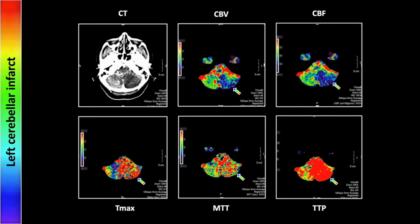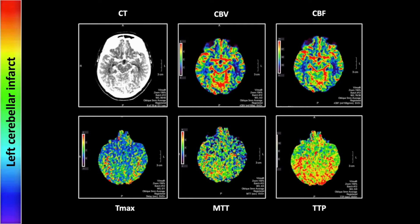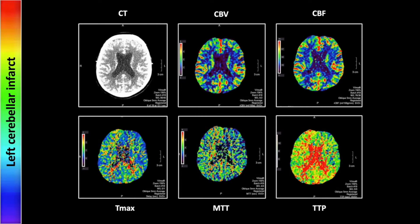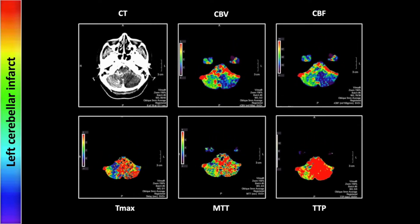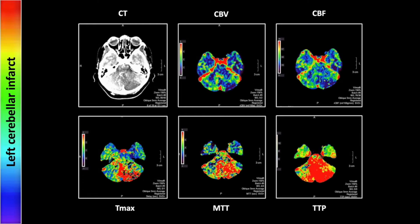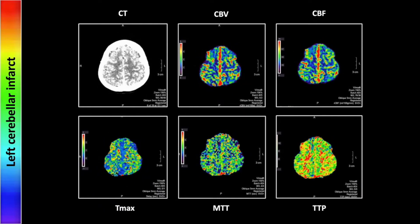Alright, let's move on to a cerebellar infarct. Here we see matching abnormalities of the left cerebellar hemisphere on the CBV and CBF, but also on the Tmax and TTP. The TTP may suggest a little added region suggesting a smallish penumbra, but I think taken in total this is probably infarcted with relatively little salvageable tissue. That is a left cerebellar hemisphere infarct.